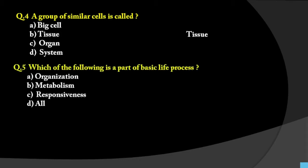Question 5: Which of the following is a part of basic life process? The options are organization, metabolism, and responsiveness. All three are part of basic life processes. Organization means a cell being organized, metabolism means breakdown of parts or molecules, and responsiveness means showing a reflex action or response. So all three functions come under basic life processes, and the answer is all.